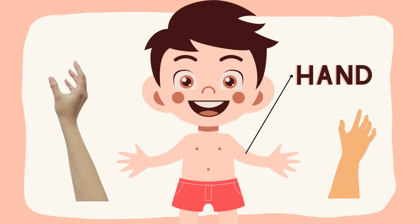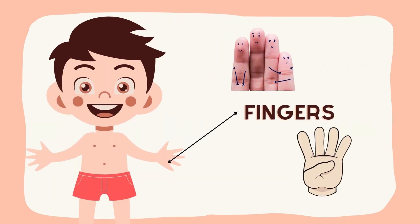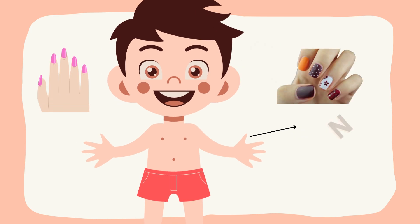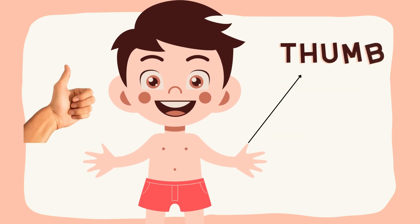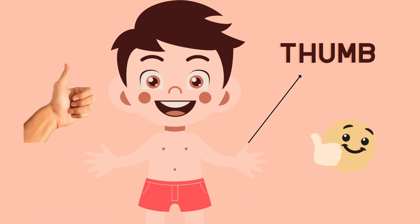Hands — Haath. Fingers — Ouliaan. Nails — Narkoon. Thumb — Aoutha.